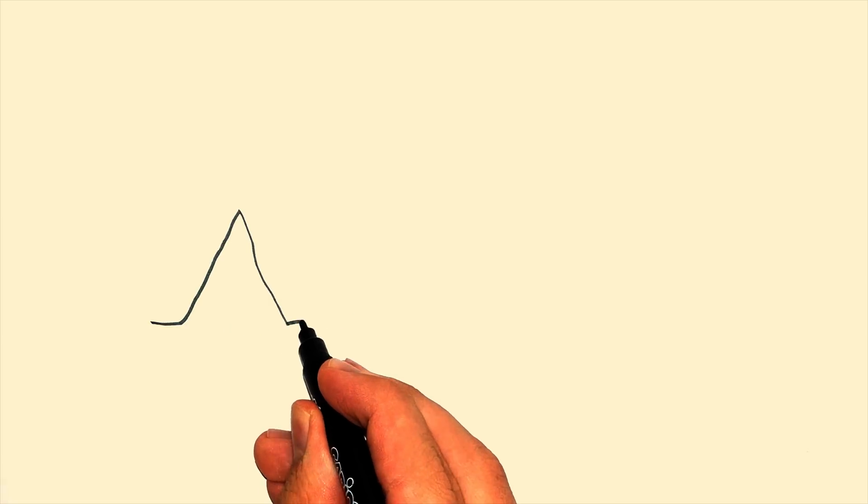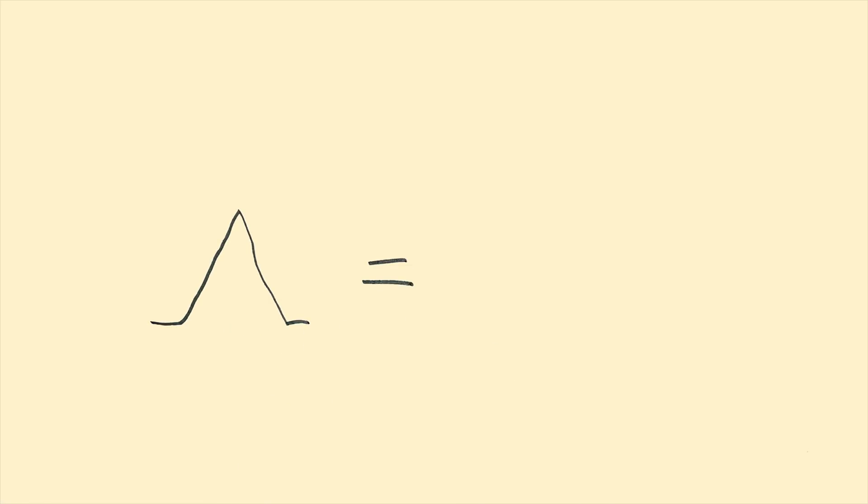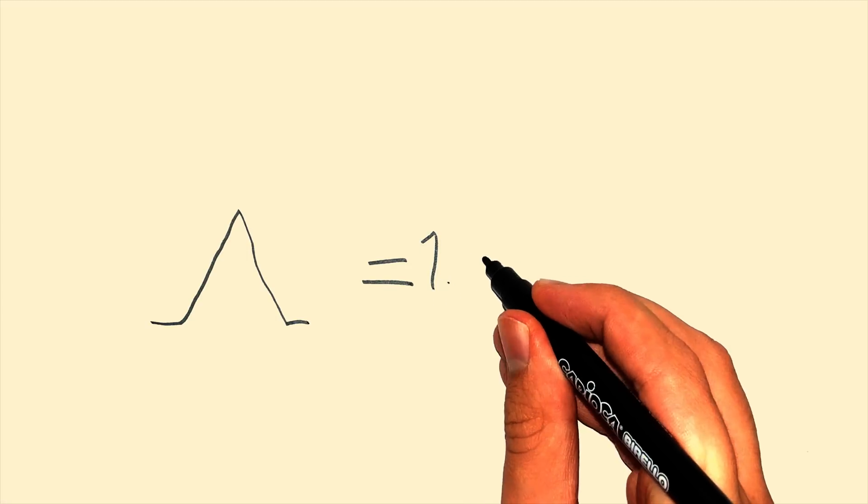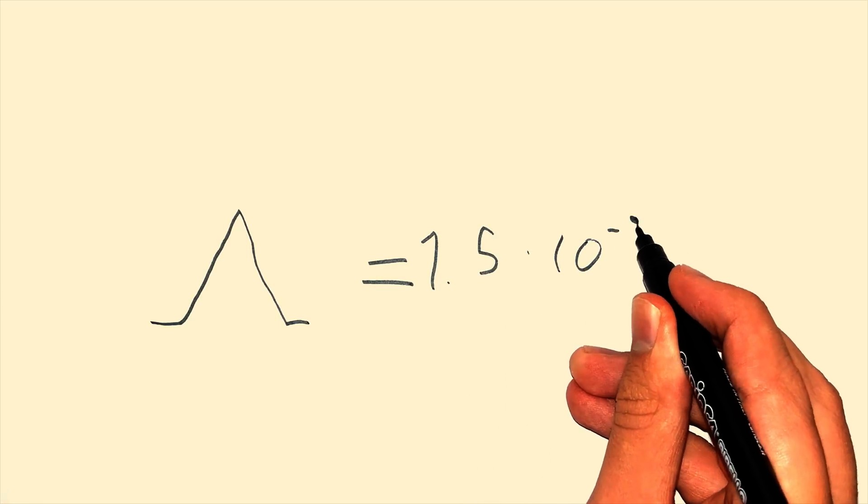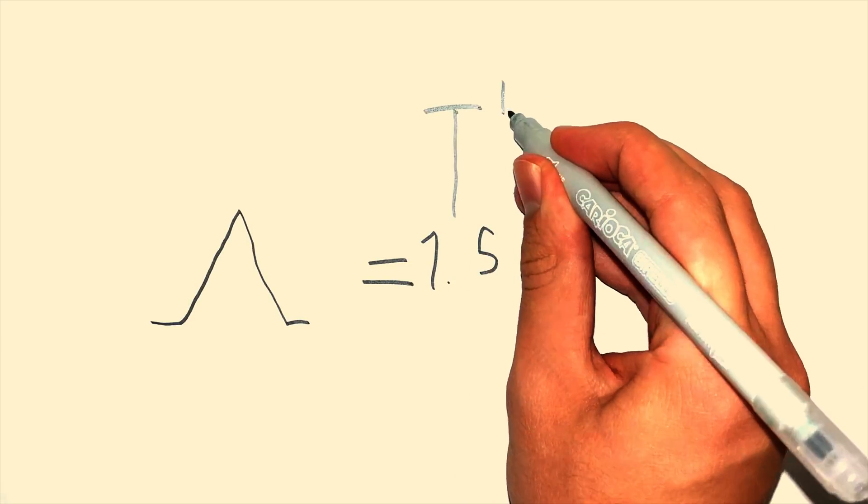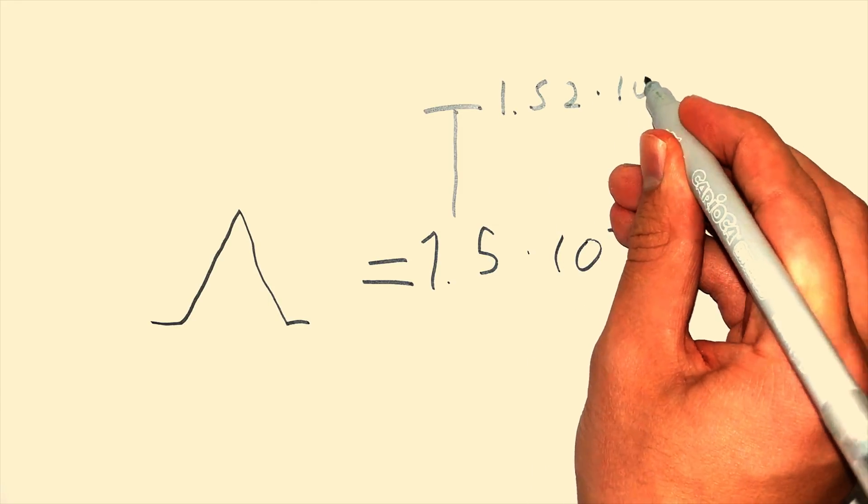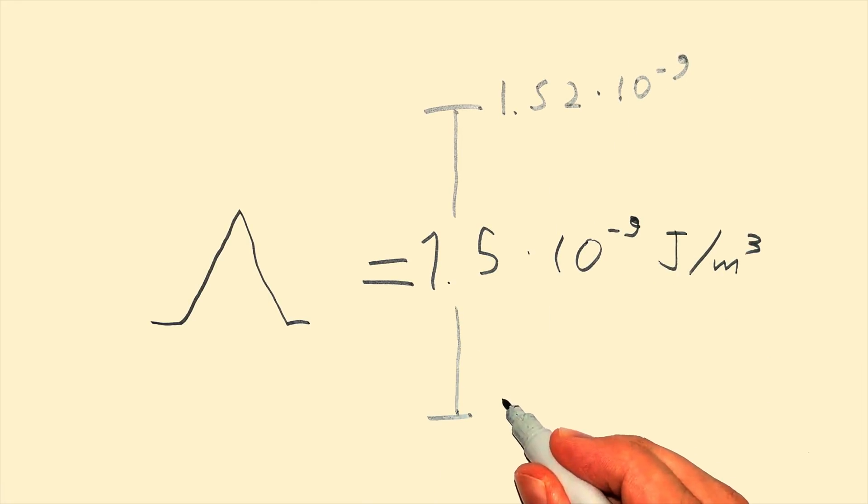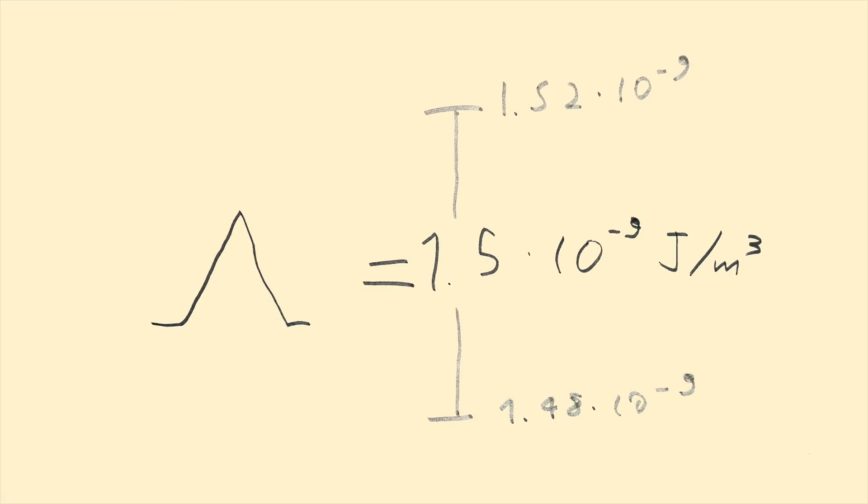So what is the value of the cosmological constant? Haha, good question! Experimentally, by measuring the expansion rate of the universe and by analyzing the CMB, we have found that in SI units, lambda is 1.5 times 10 to the minus 9 joules of energy per cubic meter. The average of 1.52 times 10 to the minus 9 and 1.48 times 10 to the minus 9. This is the amount of dark energy a cubic meter of vacuum has.